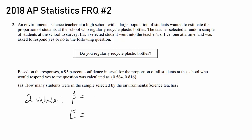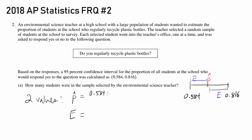What is the sample proportion? Our interval extends from 0.584 to 0.816, and the sample proportion is the value at the center of it. So p-hat is the midpoint: you do 0.584 plus 0.816 divided by 2, and you should get 0.7.